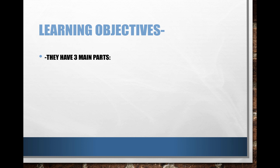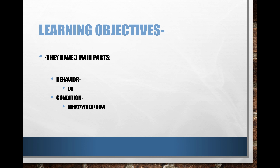Learning objectives have three main parts. While separately they're confusing, once you put them together it's pretty clear what a learning objective is. The first part is a behavior — whatever the student is doing. The second part is the condition — the what, the when, the how. The third part is the criteria — the evaluation piece. The condition and the evaluation are really what set learning objectives apart from learning targets. Our learning targets had a behavior, like 'I can read' or 'I can research,' but they didn't have specific conditions or criteria for whether the student was able to do it.